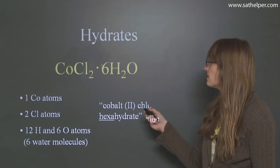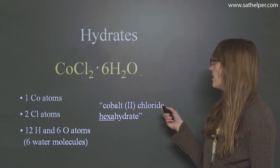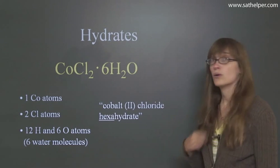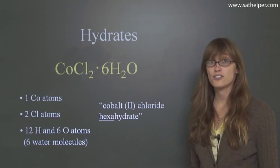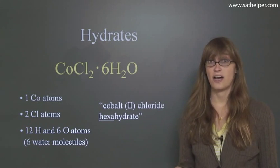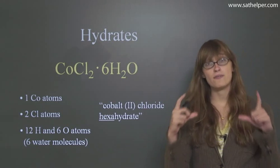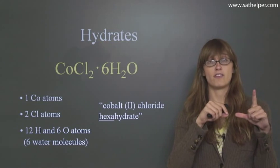Then we have 2H atoms here, but because we have a 6 as the coefficient, we're going to multiply the 6 by 2 and the 6 by 1 here. So overall, we realize that we have 6 times 2, which is 12 hydrogen atoms, and 6 times 1, which is 6 oxygen atoms. So if you have parentheses with a number outside, you just take that number and multiply it by everything inside.